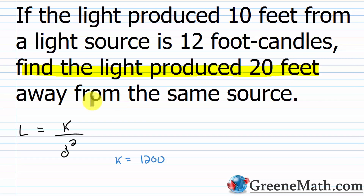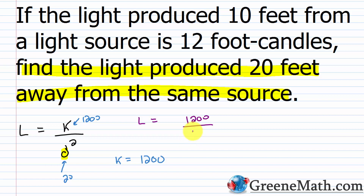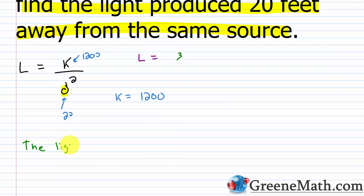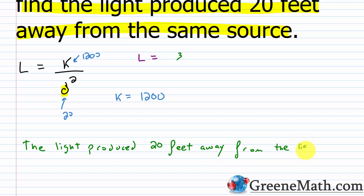Find the light produced 20 feet away from the same source. D is now 20, and k is still 1200. So L equals 1200 over 20 squared. 20 squared is 400, so L equals 1200 over 400. Canceling a common factor of 100 gives 12 over 4, and 12 divided by 4 is 3. The light produced is 3 foot candles. So the light produced 20 feet away from the light source is 3 foot candles.